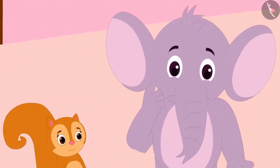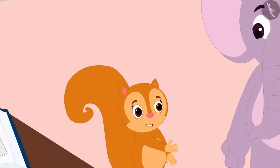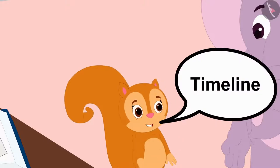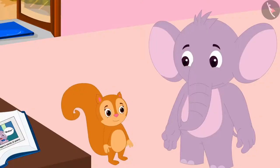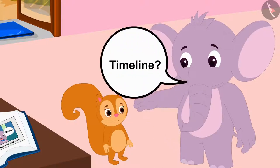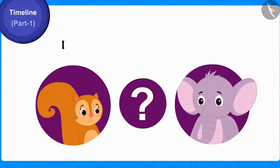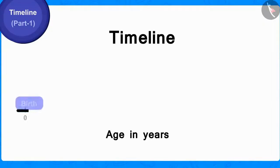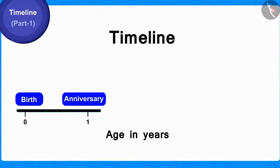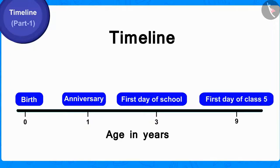Appu could not understand how they could do this. Chanda then told him that they could use the timeline to put his pictures chronologically according to time. Appu asked Chanda, what is this timeline? Children, do you know about the timeline? A timeline is a line on which we can depict the events that have happened in the life of any person in order of chronology.